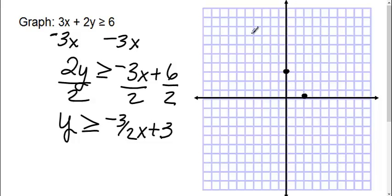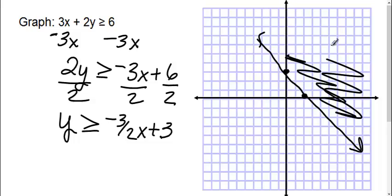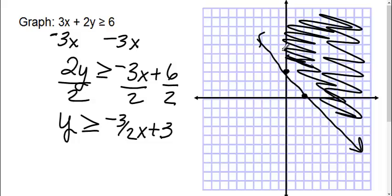Now since it's greater than or equal to, I'm going to use a solid line. And then I need to shade. y is greater. So I'm always looking at the y axis where the y numbers are greater than this line, which is above. So I would shade above my line here.